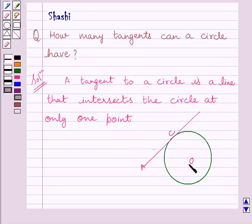This is a circle with center O and AC is the tangent to the circle. Point of intersection of circle and the tangent is C. This point is known as point of contact.